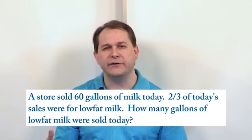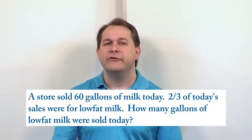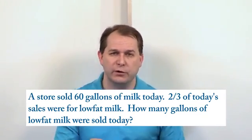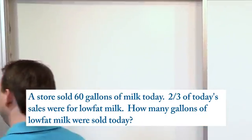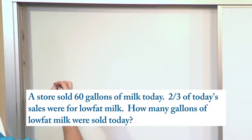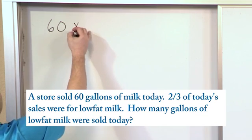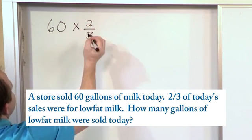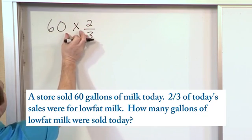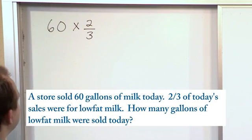But anyway, in terms of logic, you know how many gallons were sold today. Two-thirds of today's sales was for low-fat. So clearly we want to multiply these two things together to figure out the answer. So you have 60 gallons of milk that we sold today, but only two-thirds of them were actually low-fat. So two-thirds of the 60 gallons, the of basically implies that you're multiplying.